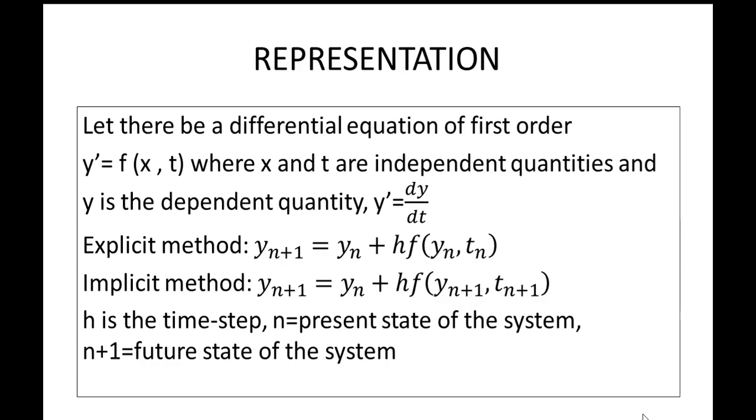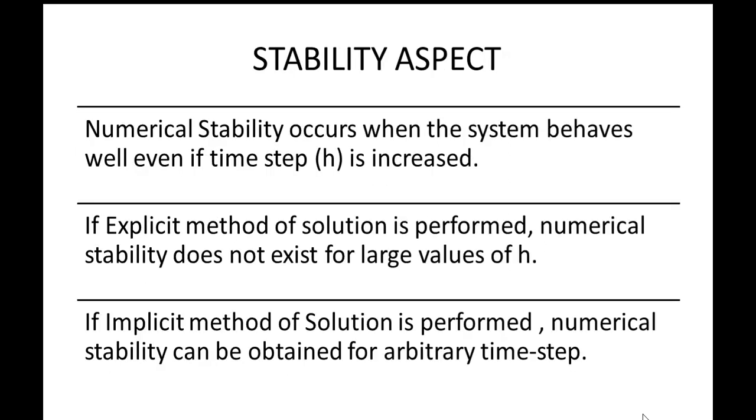When we are doing the implicit method, we are calculating the future conditions of y on the basis of y_n + h * f(y_n+1, t_n+1), that is in the future time what will be the state of the system. On basis of that we are getting an idea along with the present conditions about the final state of the system. So here there is a combination of both the present and the future states of the system, that is n and n+1, and the idea of time step remains the same. So these are the ways in which explicit method and implicit method is used.